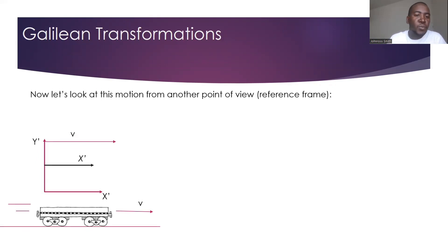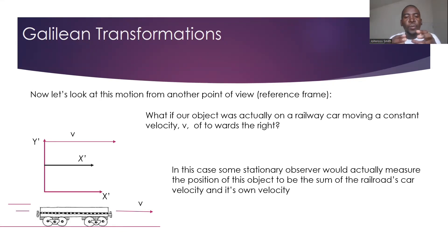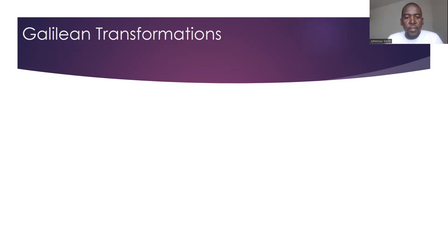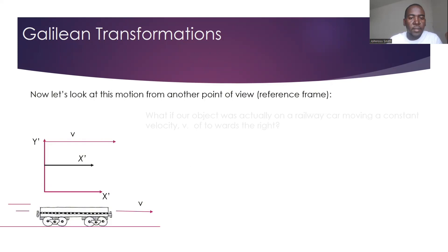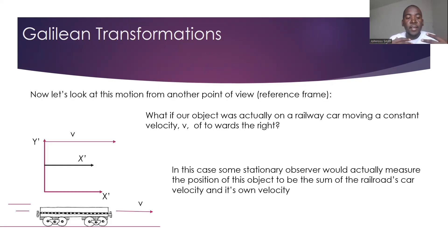Let's look at this motion from another point of view. What if our object was actually in a railway car moving at a constant velocity towards the right? So in this case, some stationary observer would actually measure the position of this object to be the sum of the railroad's car velocity and its own velocity. So what this means is, if we put the same object that was just moving to the right with a distance of vt,